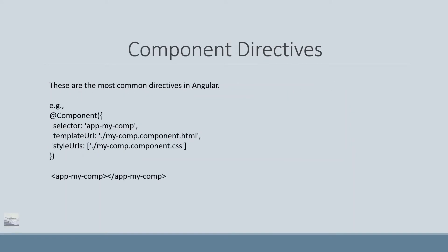Let's discuss what a component directive is. These are the most common directives in Angular. Angular provides a predefined command — ng generate component — and then the component name, which helps us in creating our own component. If you look at the generated code, you'll see it generates one class using some keyword like public class and your component name, and it decorates that component class with the @Component decorator.